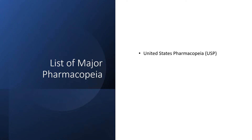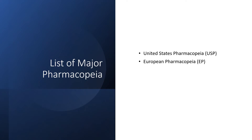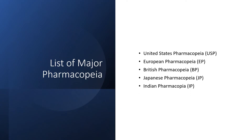Here is a list of major pharmacopoeias: first, the United States Pharmacopoeia (USP); second, the European Pharmacopoeia (EP); third, the British Pharmacopoeia (BP); fourth, the Japanese Pharmacopoeia (JP); and fifth, the Indian Pharmacopoeia (IP).